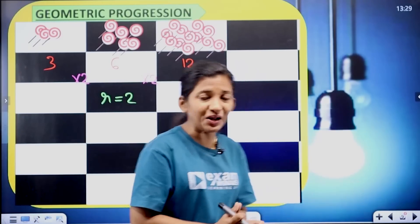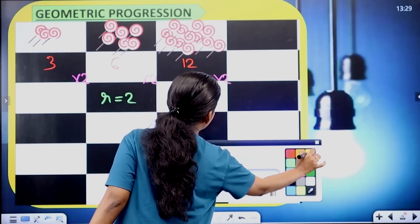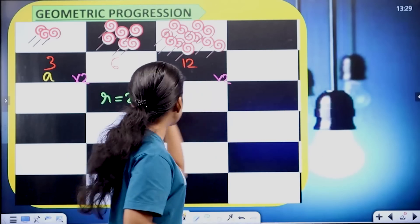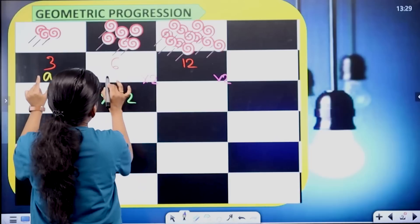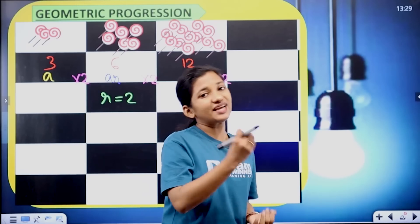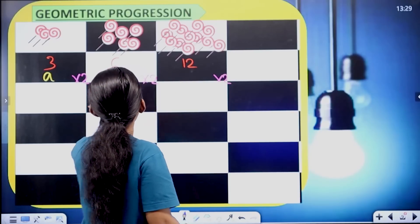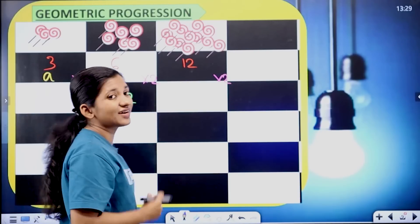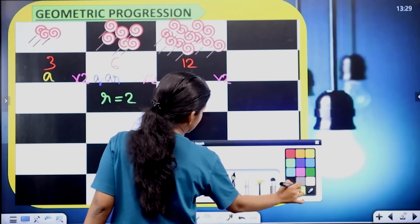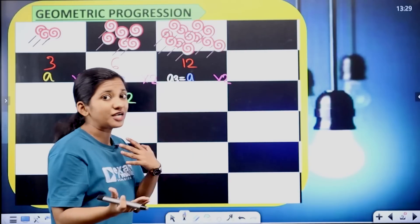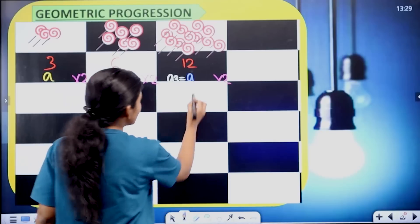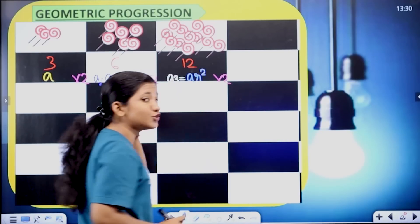Common ratio — so R denotes R equal to 2. Then, what is the first term? We consider the first term A equal to 3. R multiplied by 2 gives the second term. That is the common ratio R multiplied by 2. Second term A2 equal to AR. So here A2 equal to AR. In the third term, A3 equal to AR raised to 2.